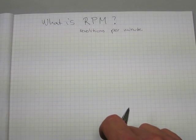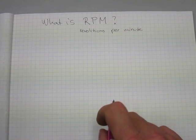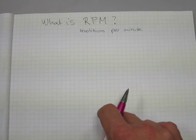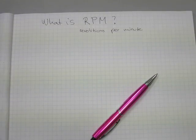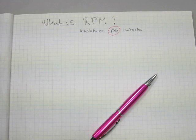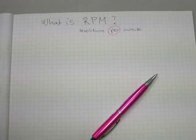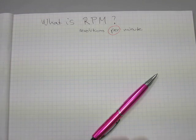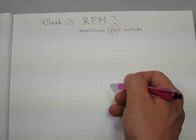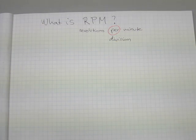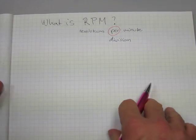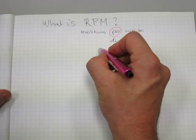Revolutions per minute is what RPM stands for, but what is RPM actually? What number operation is implied by these words? You've got this Latin slash Italian word 'per' — what does that mean? Look it up in a dictionary and you will find that it means division. The idea is division.